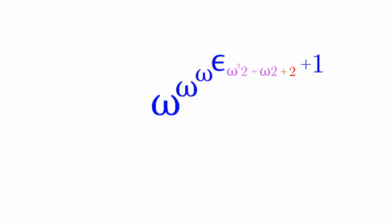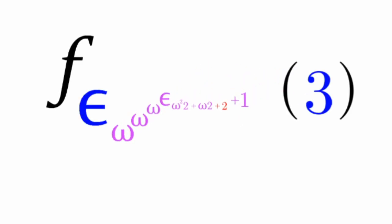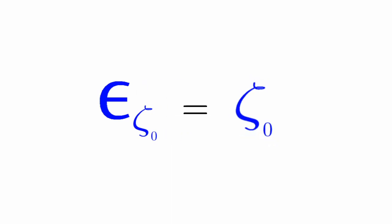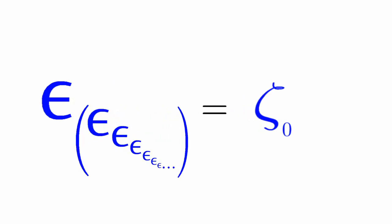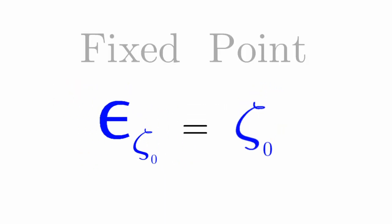Don't forget a plus 1. We plug this whole thing as the index of epsilon. If we plug zeta naught as our index of epsilon, those will just equal to zeta naught, because zeta naught is just an infinite nesting of epsilons. This is the fixed point of epsilon.